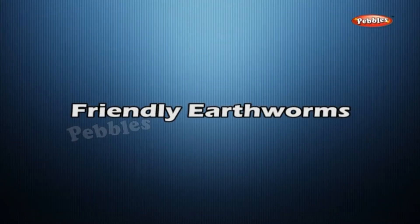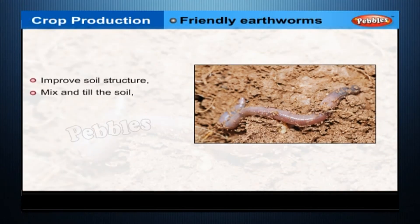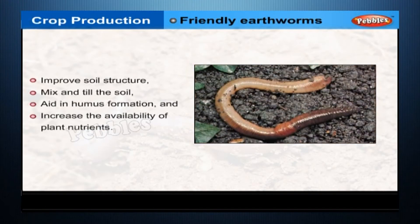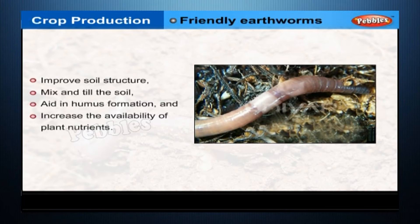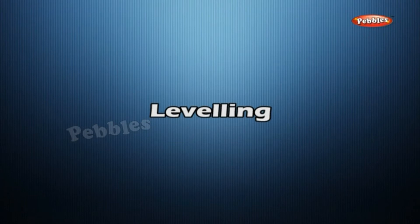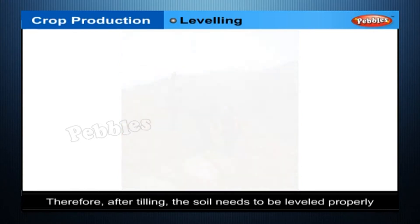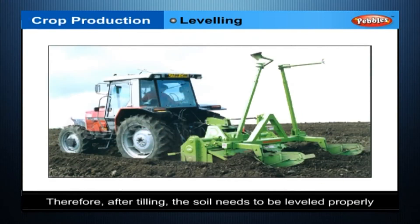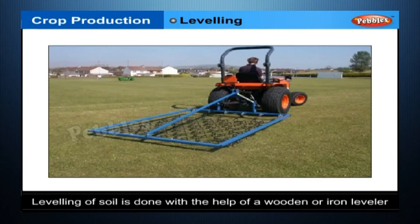Friendly Earthworms: the activity of earthworms is important to farmers because they improve soil structure, mix and till the soil, aid in humus formation and increase the availability of plant nutrients. Leveling: tilled, plowed soil may have big blocks of soil which need to be crushed. Therefore, after tilling, the soil needs to be leveled properly. Leveling of soil is done with the help of a wooden or iron leveler.